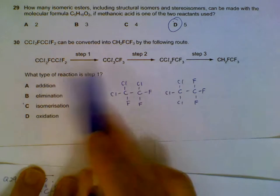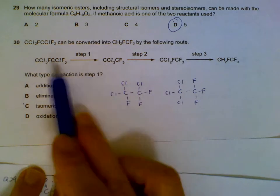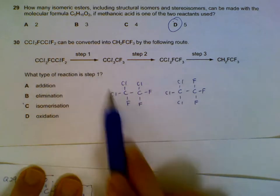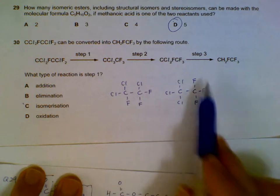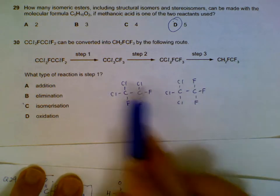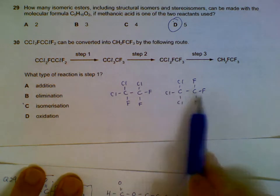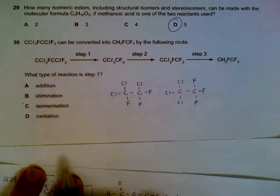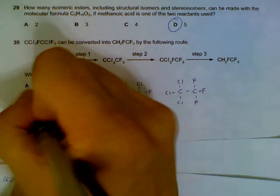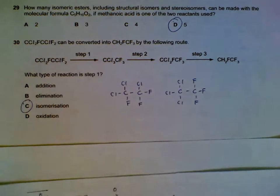Question 30: We are comparing before and after step one. So before is this structure, after will be this structure. They are the same number of atoms, it's just that they are in different positions. So the easiest way to describe reaction one will be rearrangements - we have isomerism.